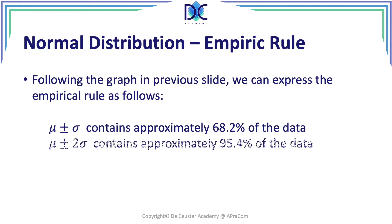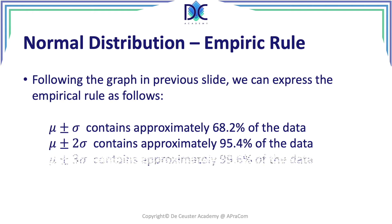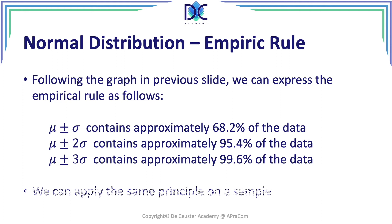When we look at two sigma, we find 95.4 percent of the data, and mu plus or minus three sigma we find approximately 99.6 percent of the data. This is also called the empiric rule and we can apply it on a population or on a sample. You can use this distribution to calculate the probability that the project will be finished in less than a certain time, more than a certain time, or between two times.